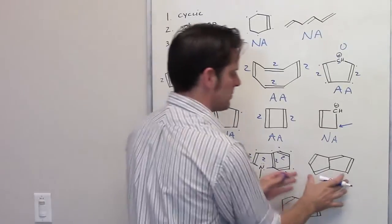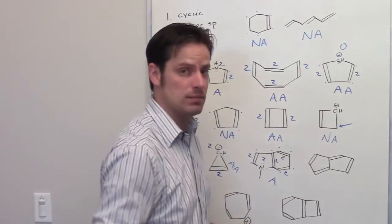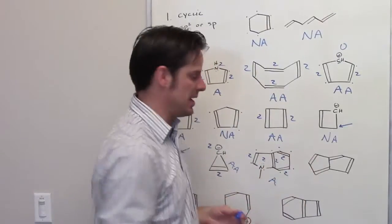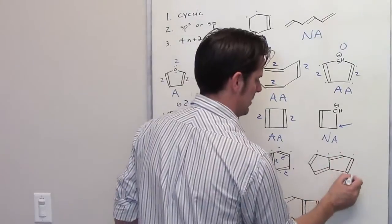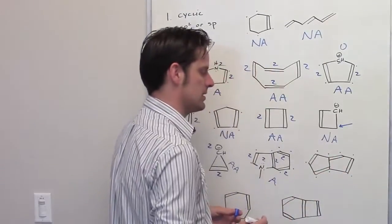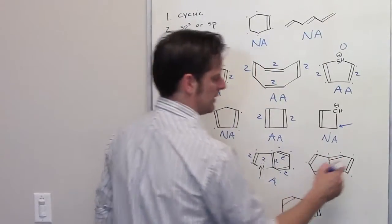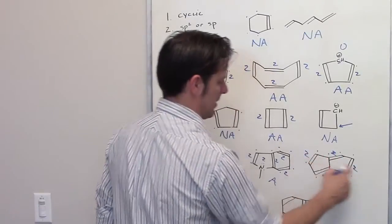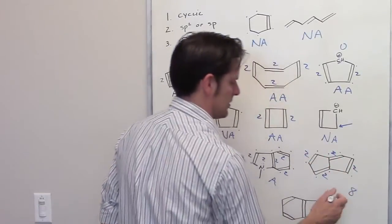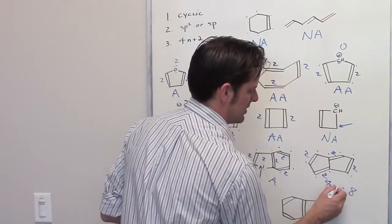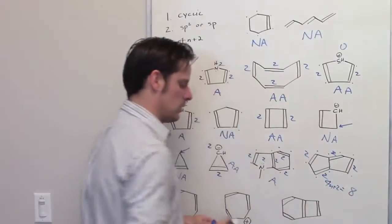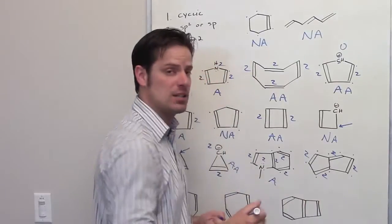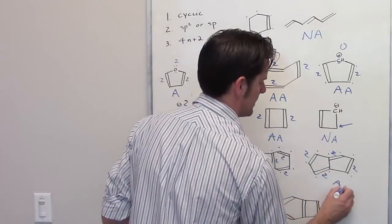Let's look at this one. Is this molecule cyclic or bicyclic? Yes, it is. Are all of the atoms in it sp2 or sp hybridized? Yes, all of these carbon atoms are sp2. Let's count pi electrons: a double bond there, a double bond there, a double bond there, and a double bond there — 8 total electrons. Can I solve 4n + 2 = 8? No. So this molecule meets criteria 1 and 2, but not 3 — it is anti-aromatic.